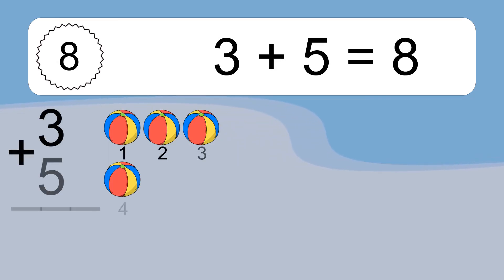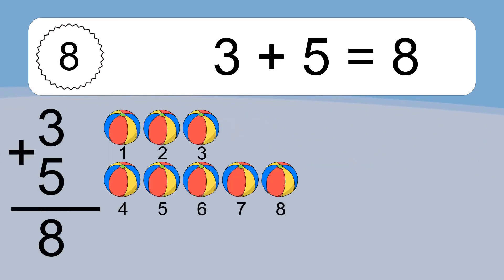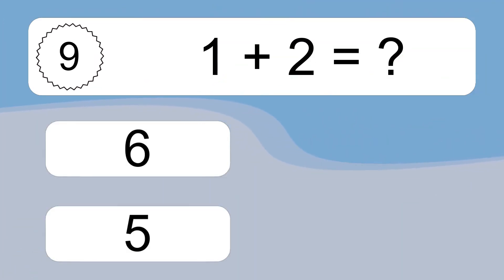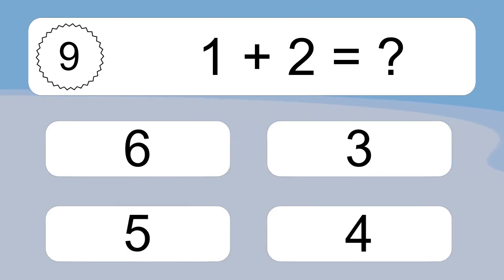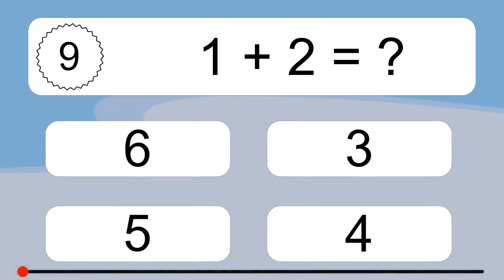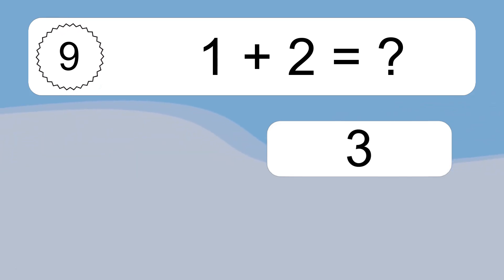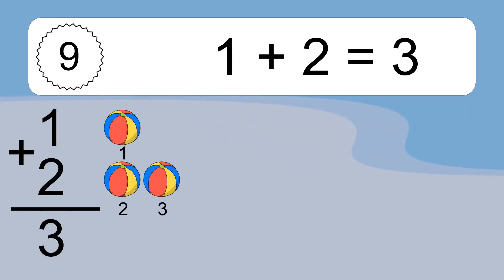3 plus 5 equals 8. Let's count it: 1, 2, 3, 4, 5, 6, 7, 8. 1 plus 2 equals what? 1 plus 2 equals 3. Let's count it: 1, 2, 3.